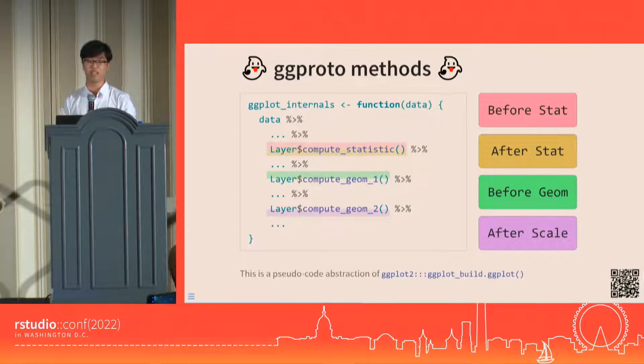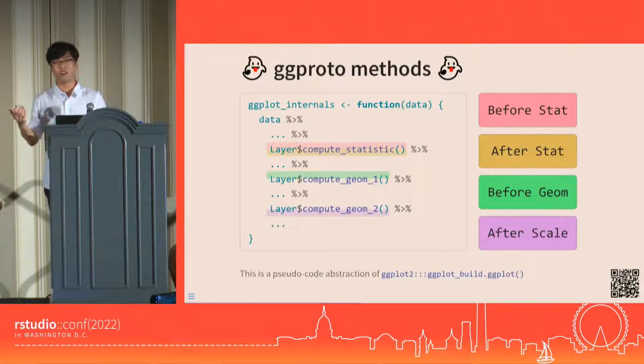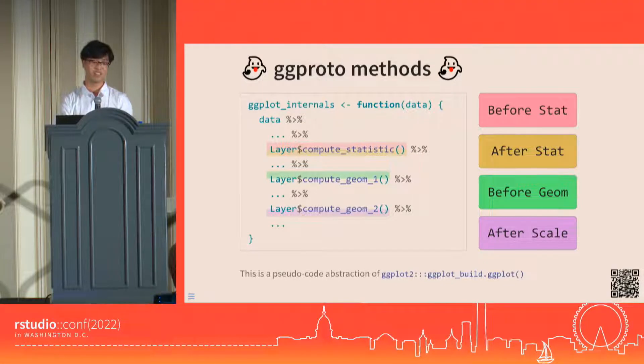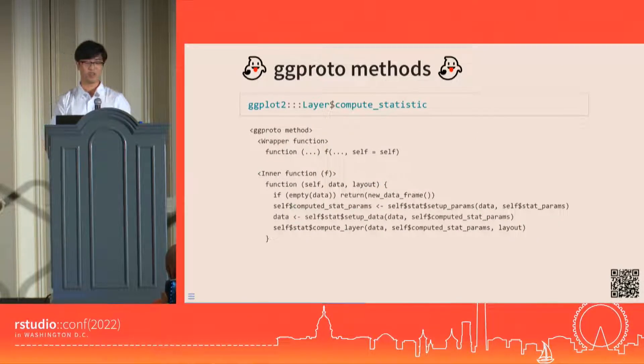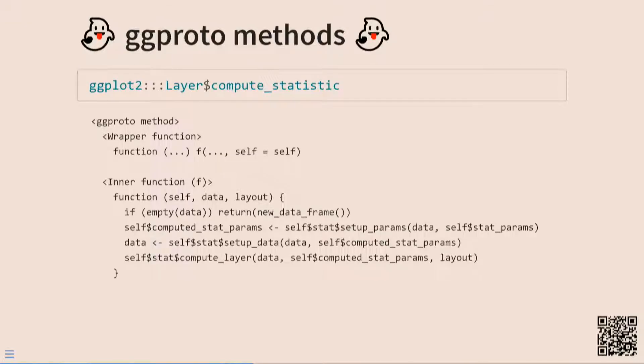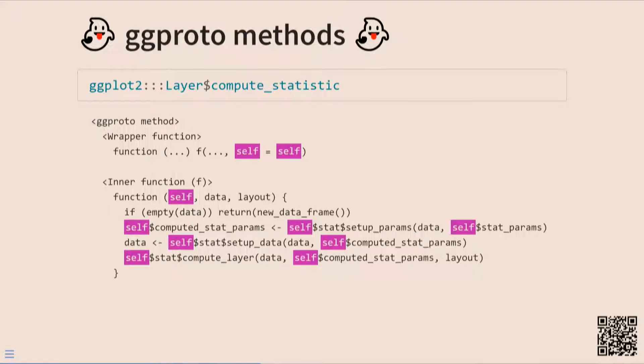The fact that the internals are written this way is a big reason why it's been kept hidden from us users. Ggproto is scary, and we're honestly better off not knowing anything about them. This first method here, layer compute_statistic, looks like this, and it's like nothing you've seen before. It's like a function, but it's composed of two other functions, and it has this argument called self, which is a big thing from object-oriented programming that's very intimidating to me as an R user, and maybe to you too, although if you are interested in OOP, you're in the right place just 40 minutes earlier.